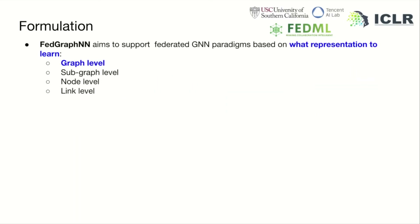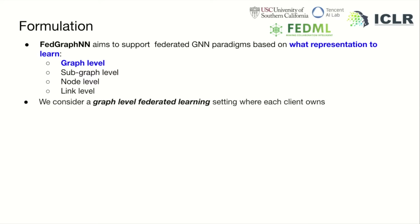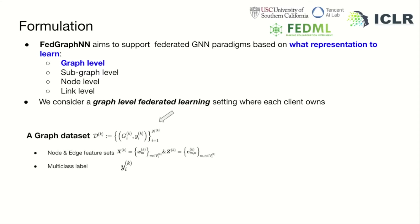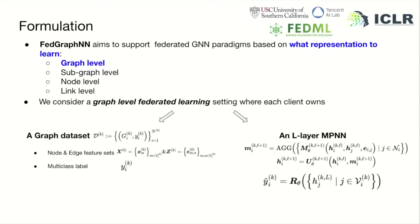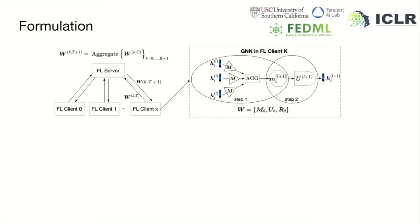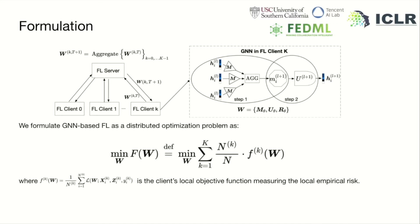FedGraphNN currently supports graph-level federated learning. In this setting, each client owns a graph dataset and a GNN model to learn graph-level representations. Clients have MPNN as it generalizes some popular GNN choices. Multiple clients collaborate through a server to improve their models without revealing their graph datasets. We formulate GNN-based FL as a distributed optimization problem, and we try to solve this via FedAverage.